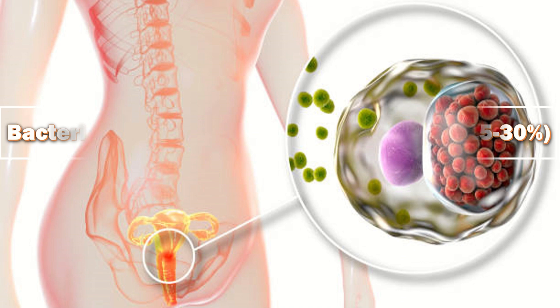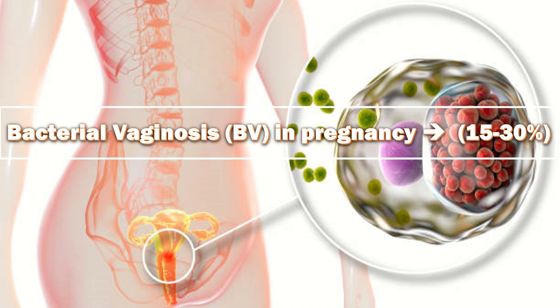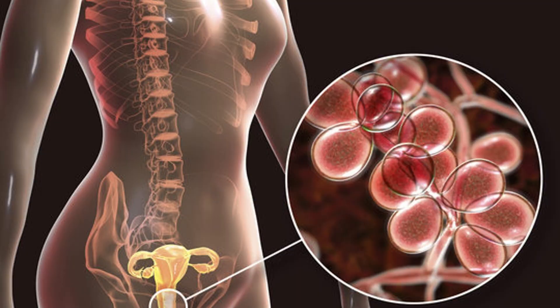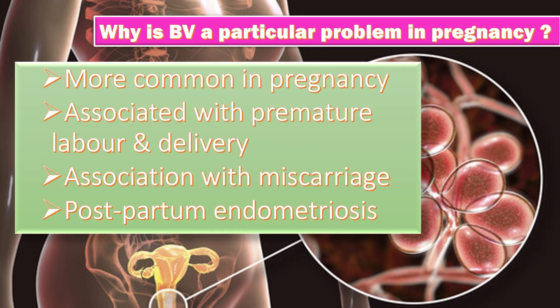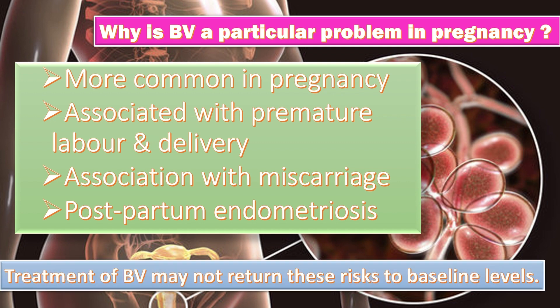Bacterial vaginosis in pregnancy occurs in 15 to 30 percent of cases. It is more common in pregnancy than in the non-pregnant population. It is associated with premature labor and delivery, has a controversial association with miscarriage, and causes postpartum endometritis. However, treatment of bacterial vaginosis may not return these risks to baseline levels. Benefits are greater in those with higher-risk pregnancies.